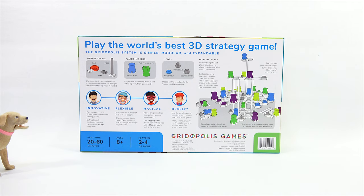Player markers. Players use markers to move. Start off as a pawn, then get kinged. Oh. It's kind of like a checkers theme. Interesting. Then you've got nodes. Placed on the round pads, the nodes. I'm putting air quotes up right now. There you go. Modify gameplay. The single quotes, too. You can't do doubles there. The single air quotes, yes.